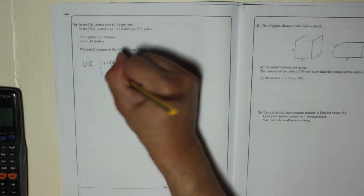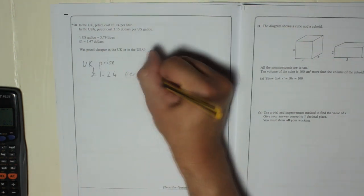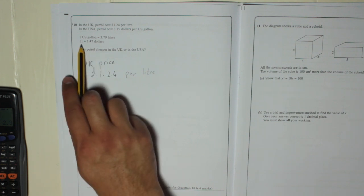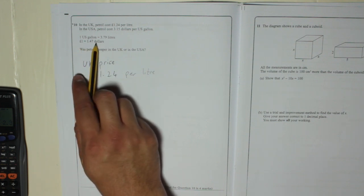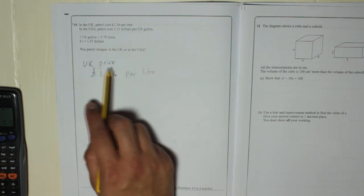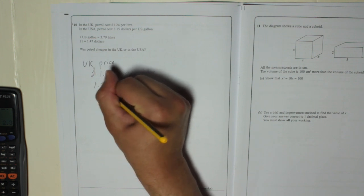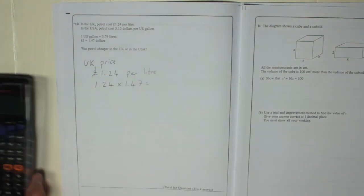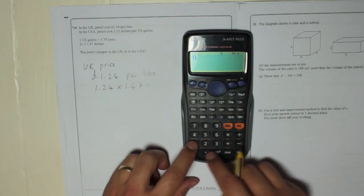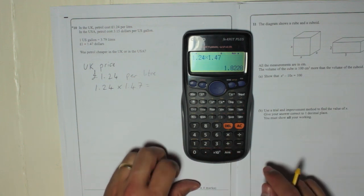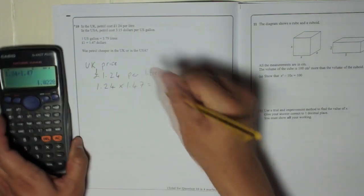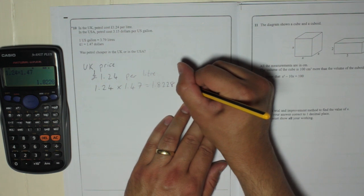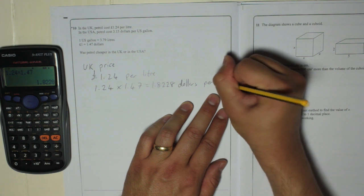So it's £1.24 per litre. Let's turn that into dollars. If £1 is $1.47, that means every pound is $1.47, so we're going to take the number of pounds and times it by 1.47. So 1.24 times 1.47 is $1.8228 dollars. So what we've done there is we've turned into dollars per litre.